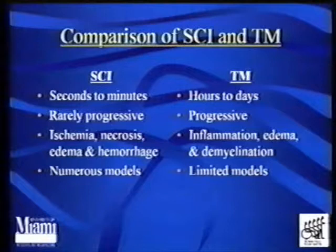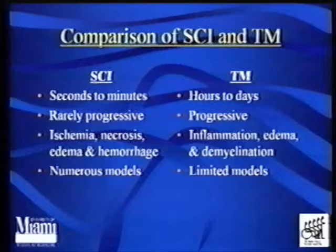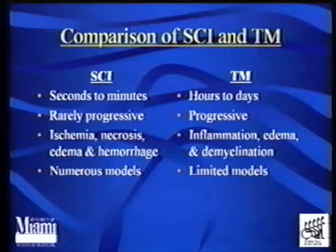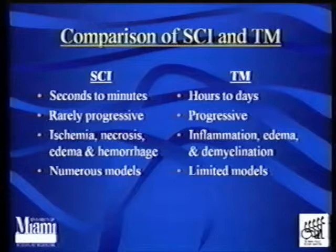The pathology seen in both diseases — there are some things that may be shared, but they're also different. So we've got to keep this in mind when we're trying to apply one thing to the other. Ischemia is a big component of spinal cord injury, which is the lack of blood flow. Necrosis, or cell and tissue death, are very evident. There are some forms of TM or Devic syndrome that may have a component of necrosis, but certainly not as much as in spinal cord injury.